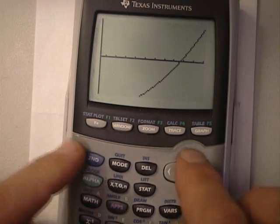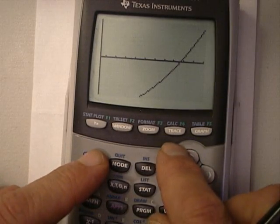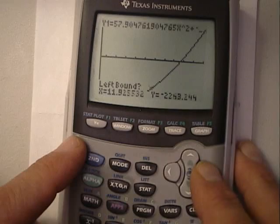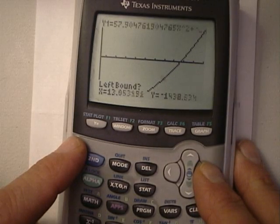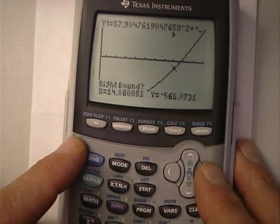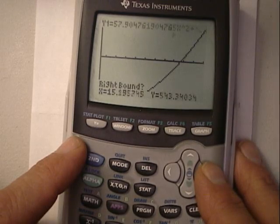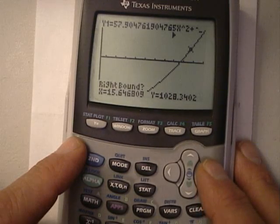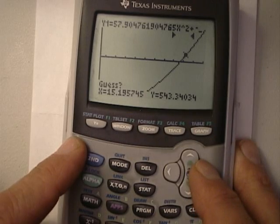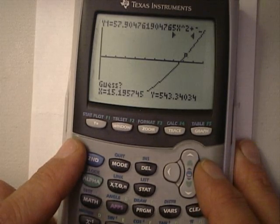And now all I have to do is find the zero. So it's 2nd calc and zero. This one's a little different. I have to go on the left side of it, of the zero, of that intersection with the horizontal axis. Unfortunately, I cannot use the intersect command here. I have to go to the right side of it, and then I have to be somewhere in between, and I press enter again.